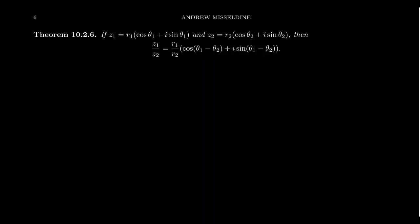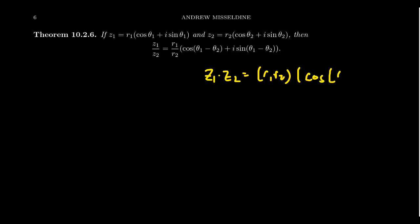This matches what we've seen previously with multiplication: z1 × z2 gives you r1·r2 for the moduli multiplied together, and cos(θ1 + θ2) + i sin(θ1 + θ2), adding together the arguments.